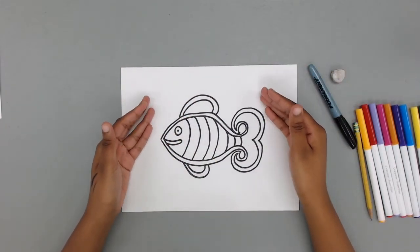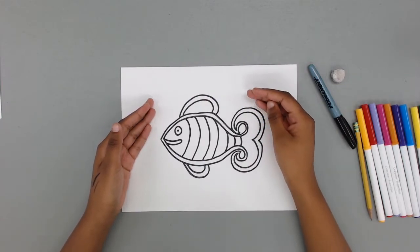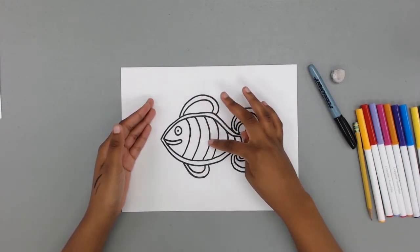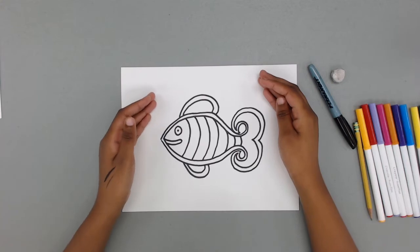Now that we are finished drawing our fish, we're going to fill in the fin areas, the body, and the tail with creative line patterns.